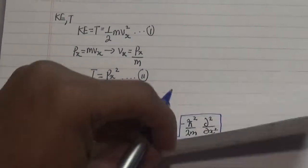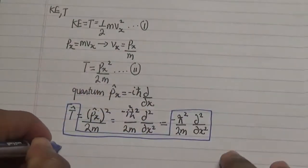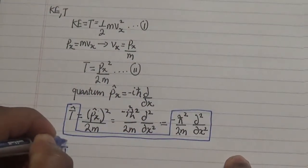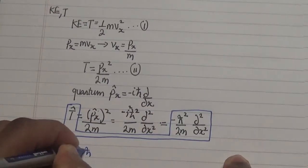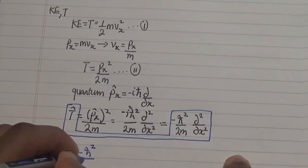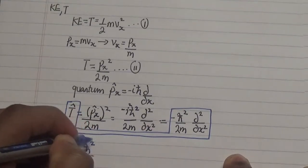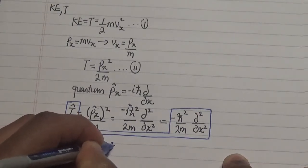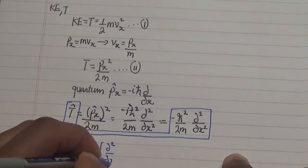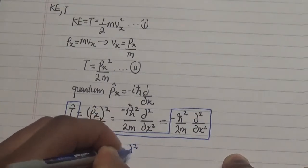Now I want to change this into a three-dimensional case. What we have is T operator equals to negative h bar squared over 2m. Now you multiply this by the addition of the coordinates in x, y, and z.